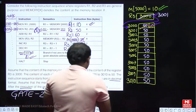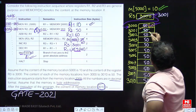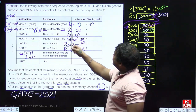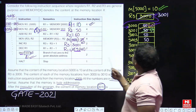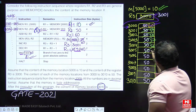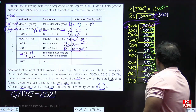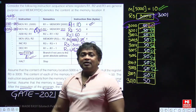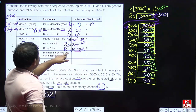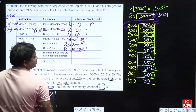The final updated values are: memory[3000] = 60, memory[3001] = 59, then 58, 57, 56, 55, 54, 53, 52, memory[3009] = 51. After 10 iterations, R1 becomes 0 and the process stops immediately.